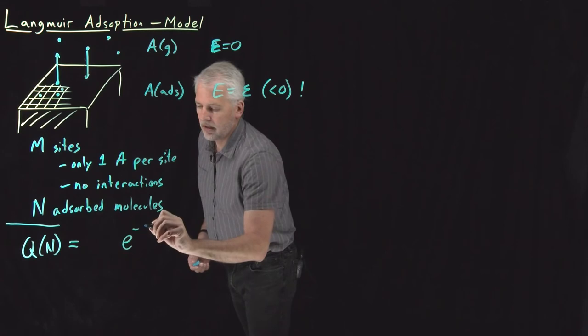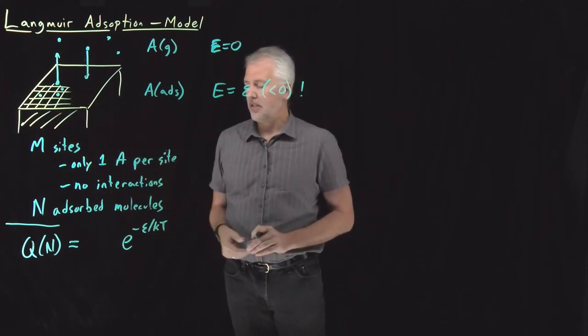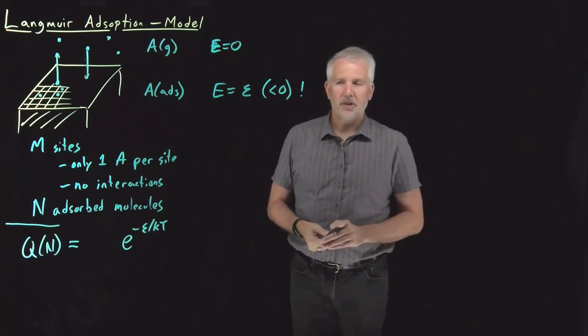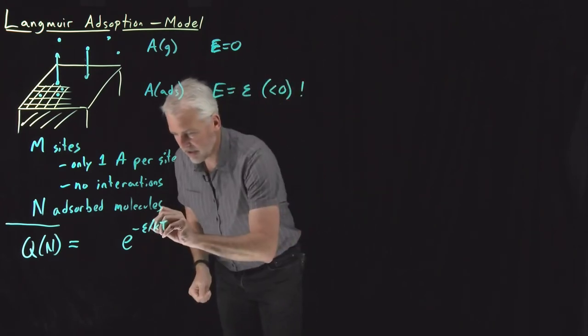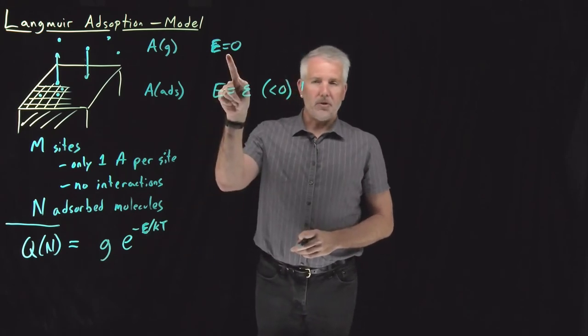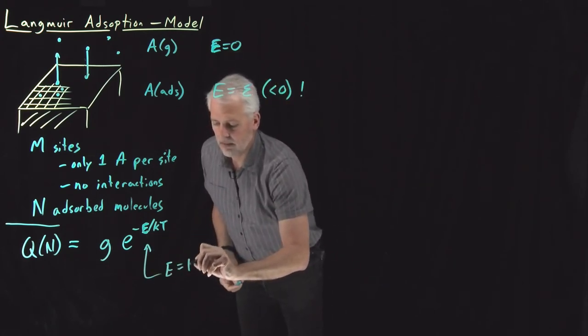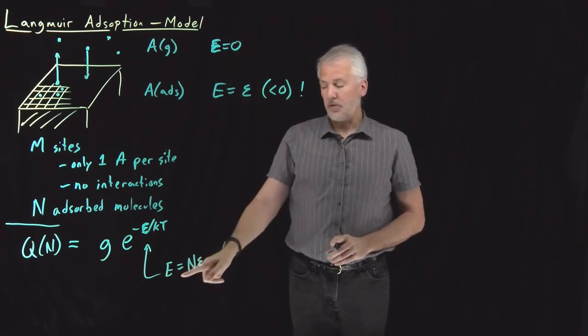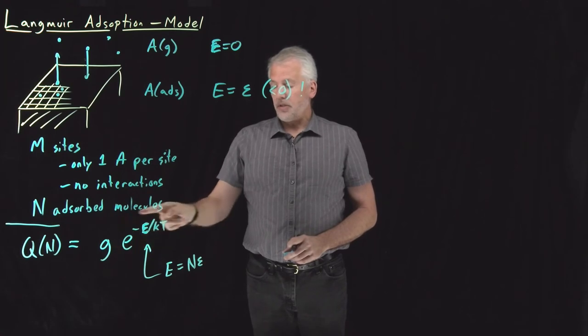So I have E to the minus epsilon over KT for each one of the molecules on this surface. And if I have N molecules adsorbed onto the surface into a total of M different adsorption sites, there's a degeneracy. This should be a capital E. It's the total energy of the system. So the total energy of the system, I have some molecules with no energy, I have some molecules with epsilon amount of energy. The total amount of energy is going to be each of the N molecules adsorbed to the surface has an energy epsilon. The molecules that are not adsorbed to the surface have an energy zero. So the total amount of energy is N times epsilon. If I have N molecules adsorbed to the surface, that's always going to be the energy, so this is always going to be the Boltzmann factor.